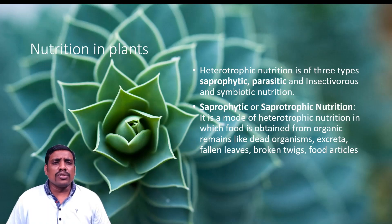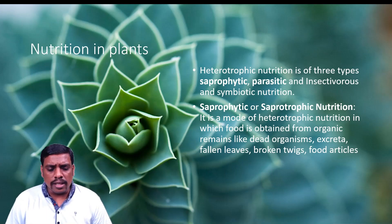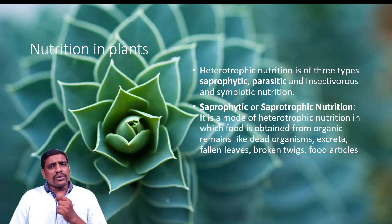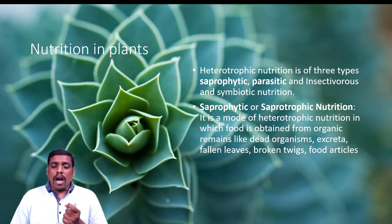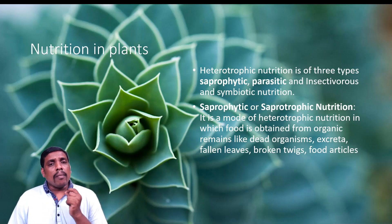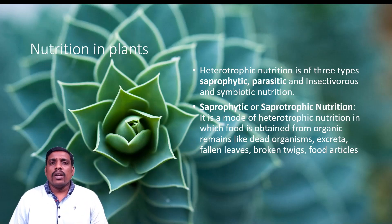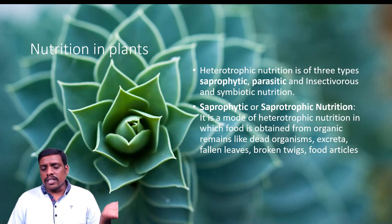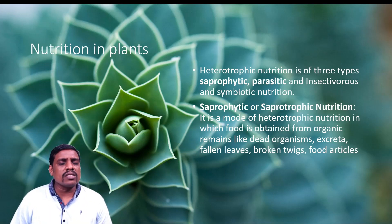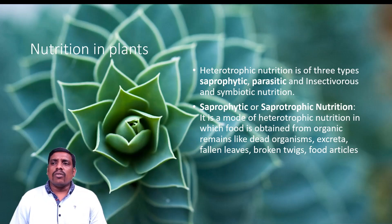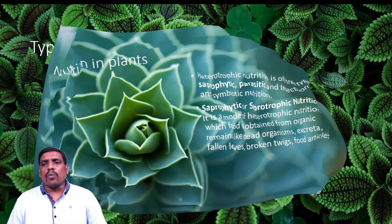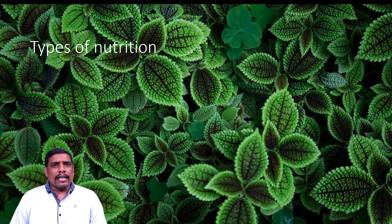Saprophytic nutrition is a mode of heterotrophic nutrition by which plants or organisms obtain their food from dead and decaying organic matter or organisms. It can also come from excretory matter, fallen leaves, broken twigs, or other organic outputs.